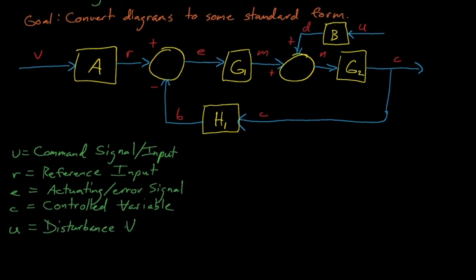Before it goes into another comparator that incorporates the function B operating on some input disturbance signal U. After incorporating the disturbance signal, element G2 acts on our final signal and produces our output signal C.